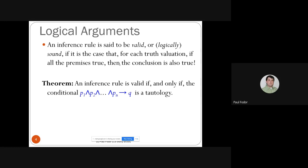An inference rule or argument form is valid, or logically sound, if for each truth valuation where all the premises are true, the conclusion is also true. We are looking only for inference rules that are valid — those that can be used to infer logical conclusions that are true. In fact, a valid inference rule means that the conjunction of all premises implies the conclusion q is a tautology.